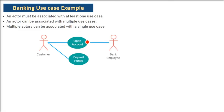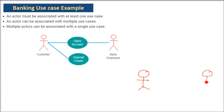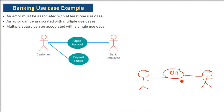This is a banking example. An actor must be associated with at least one use case. First, an actor can be associated with multiple use cases. Second, multiple actors can be associated with a single use case. You are a customer — without a customer, why would the bank exist? A customer is the basic actor, and you also need a bank employee. The basic thing is to open an account; without opening an account, you cannot withdraw money, deposit money, or get a loan. So we link the customer with 'open account,' and opening the account is done by the bank employee.